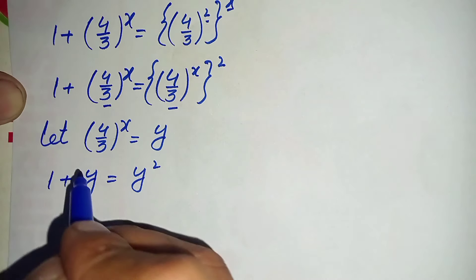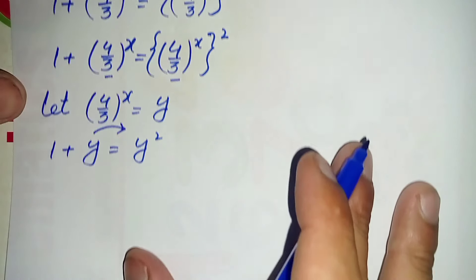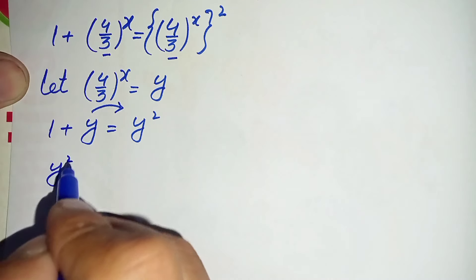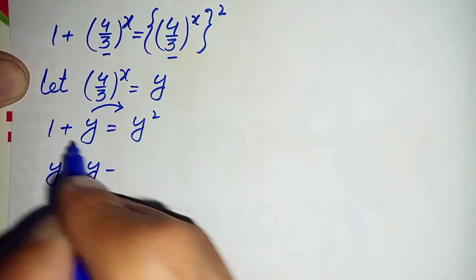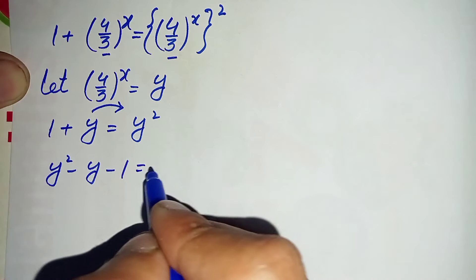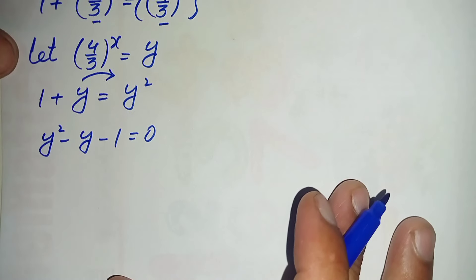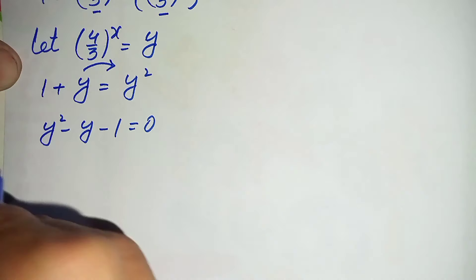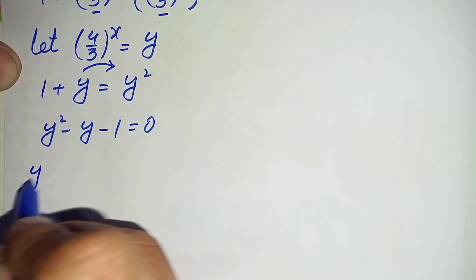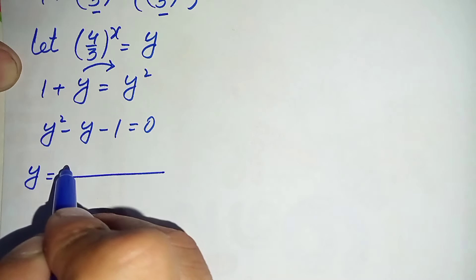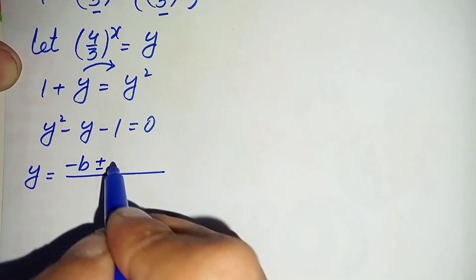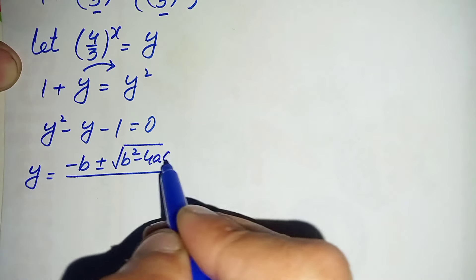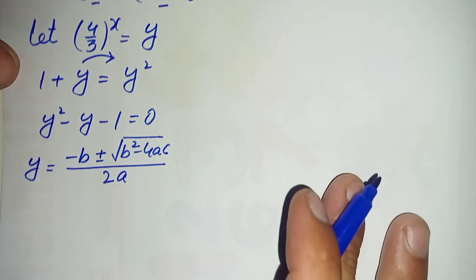Now we will take these two terms on the left hand side to the right hand side, so they will become negative. This equation will become y squared minus y minus 1 is equal to 0. Now this is our quadratic equation, and we will solve it using the quadratic formula: y equals minus b plus or minus the square root of b squared minus 4ac, divided by 2a.